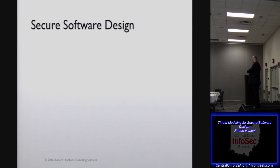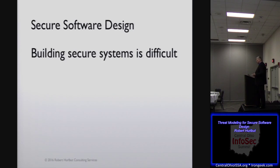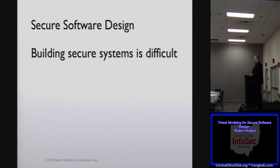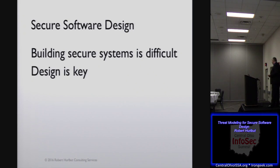When you're thinking about secure software design, you find out very quickly that building secure systems is difficult — it's not easy. We've been writing software and building systems for a while, and if you've been doing that, you've also noticed that thinking of all the potential issues within a system from a security standpoint is not the easiest thing in the world. But one of the things that's key is design — understanding your system and how it's put together, and designing it appropriately in terms of security early on makes a difference.